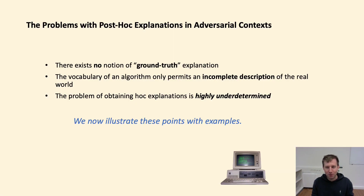Let us now turn to the discussion of the problems with post-hoc explanation algorithms in adversarial contexts. The big problem is that there is no well-defined notion of ground-truth explanation. In a complicated black-box machine learning system, the different input variables can contribute to the final prediction in many different ways. Thus, while it might be possible to explain certain aspects of a given decision function, holistic ground-truth explanations do in general not exist. Moreover, explanation algorithms only have access to a certain description of the world given by a decision function and a dataset. Thus, even if a good explanation for a particular machine prediction exists in the real world, it might still be impossible for an explanation algorithm to provide it.